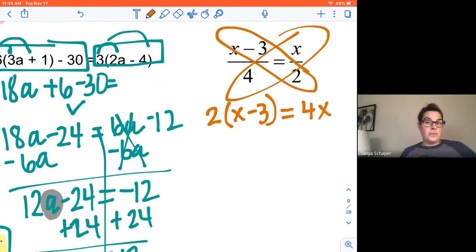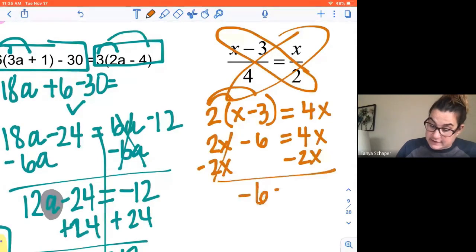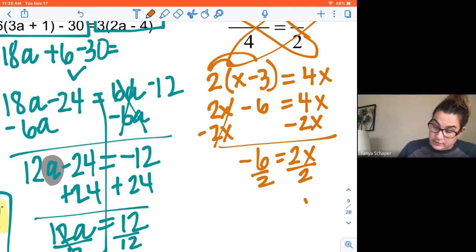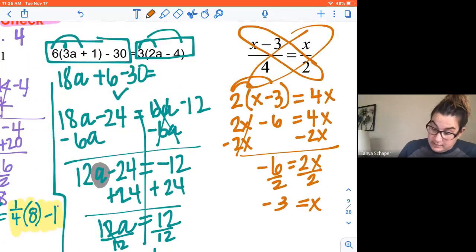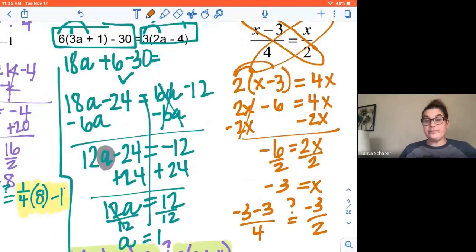From here, we're going to just work like we're used to. We're going to simplify. So 2 times X is 2X. 2 times 3 is 6 equals 4X. I want variables on the same side. So I'm going to subtract 2X from both sides. Negative 6 equals 2X. I'm going to undo my multiplication by dividing by 2. So X equals negative 3. Then I want to check it. Is negative 3 minus 3 divided by 4 the same as negative 3 divided by 2? And in this case, negative six-fourths is the same as negative three-halves.